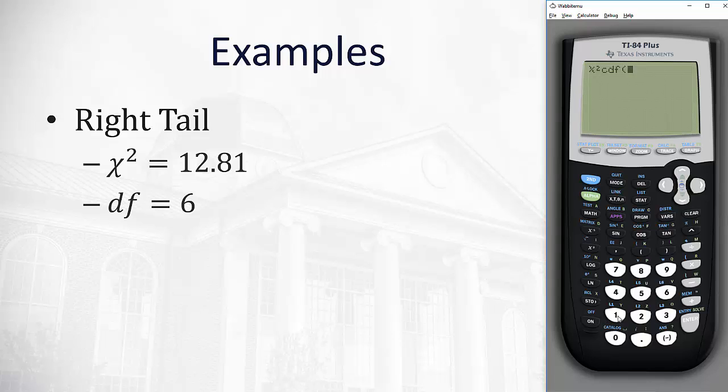Type in the lower limit, which is the χ² value of 12.81, comma, the upper limit, which is infinity (we'll use 1, second, e, 99 for infinity), comma, the degrees of freedom, 6.